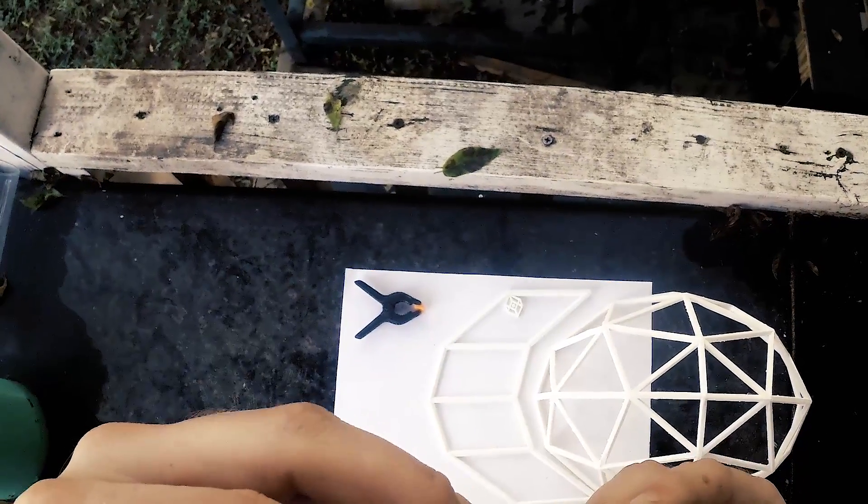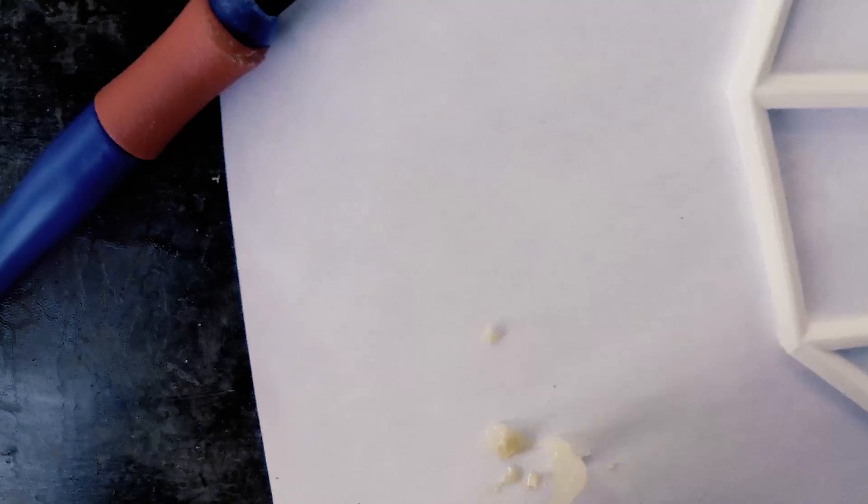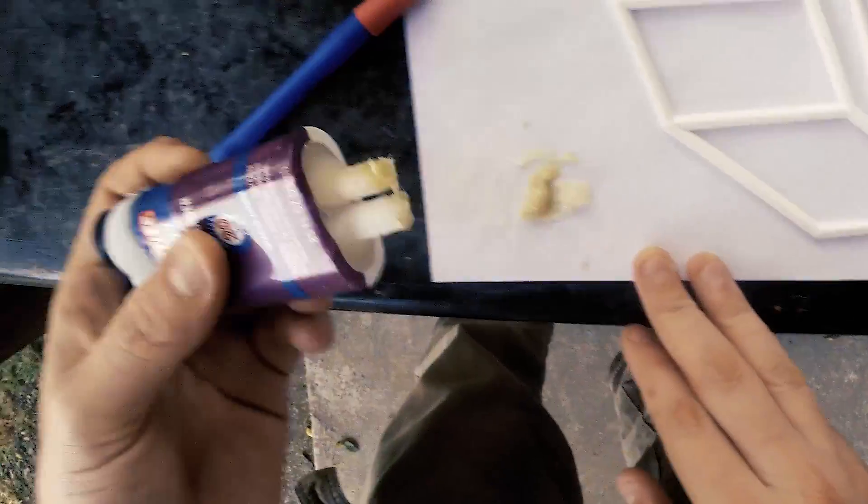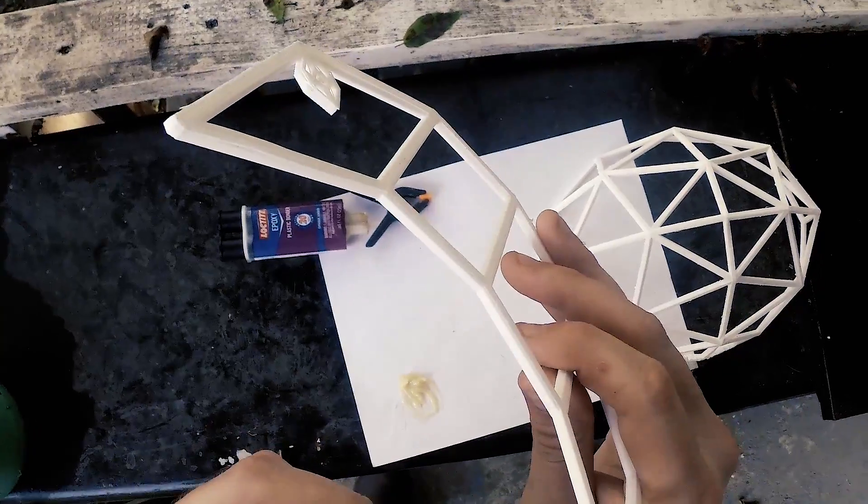First, you want to open these up so they come out in about a one-to-one ratio, equal. That looks good. Stop the flow, mix it up, and then just take some glue.